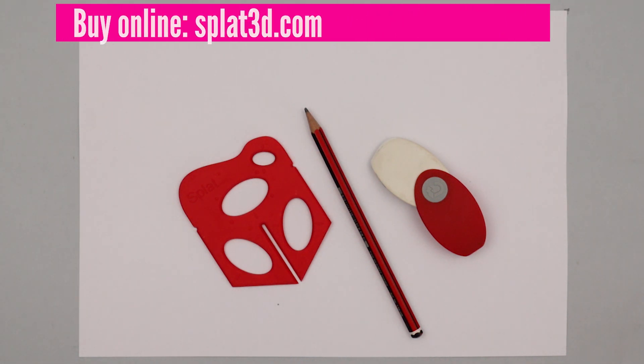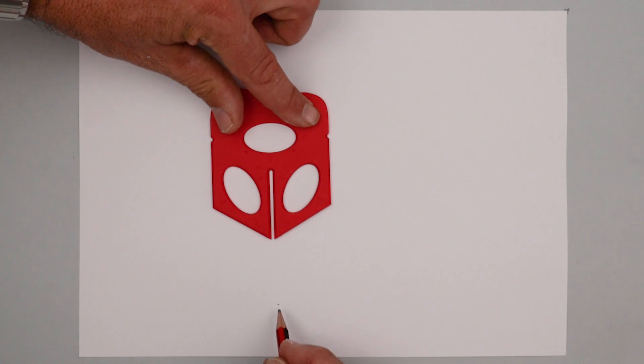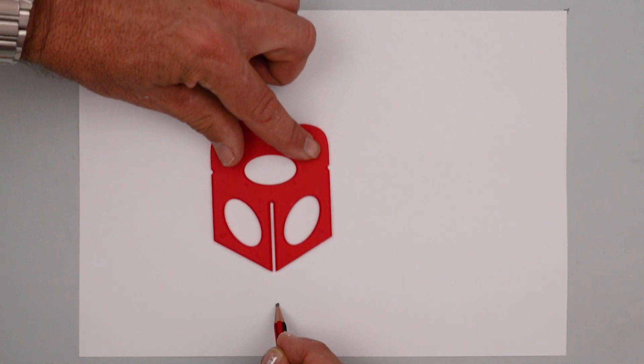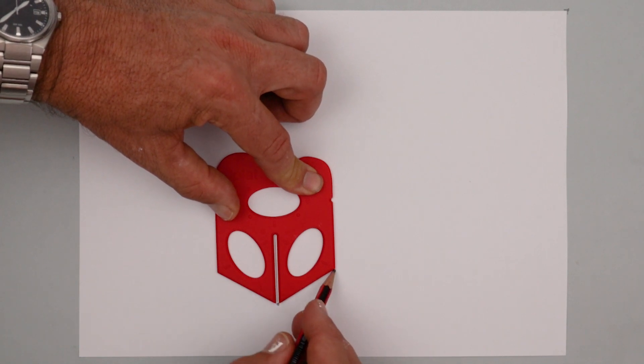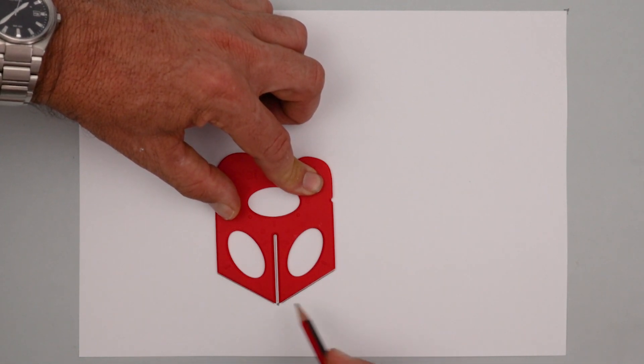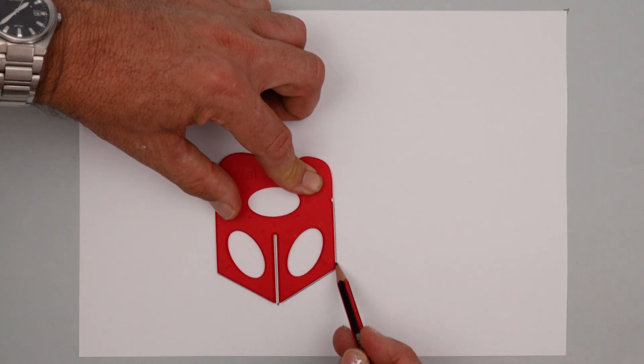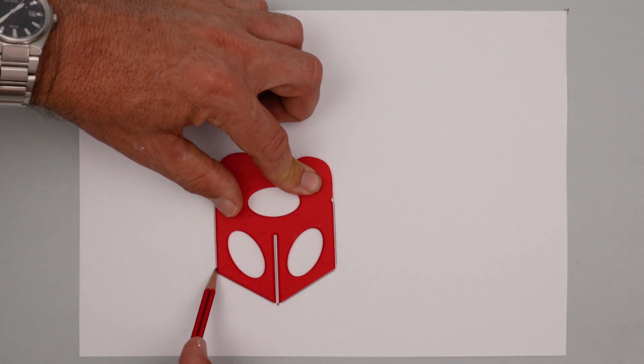You'll need a splat, pencil and an eraser. On your starting point, bring the point of the splat down and draw three lines. Also at the sides, there's a little blip, so go from the blip downwards.